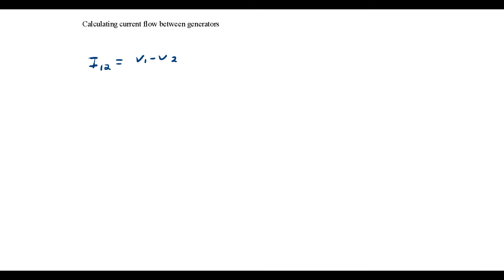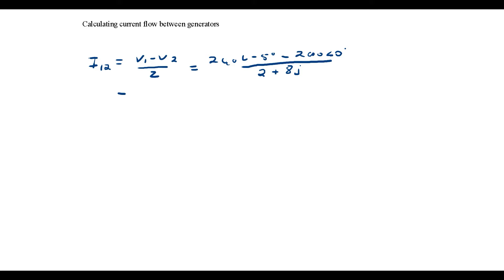First, let's calculate the current from voltage source 1 to 2. The current from voltage source 1 to 2 is equal to V1 minus V2 all over Z, which equals 240 at a phase angle of minus 5 degrees, minus 200 at a phase angle of 0 degrees, divided by Z which is 2 plus 8J ohms. This is equal to 5.376 amps.